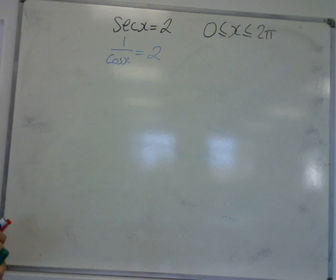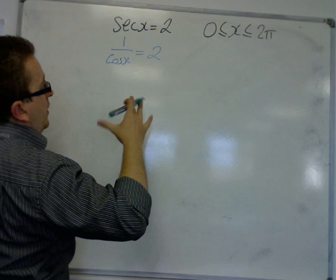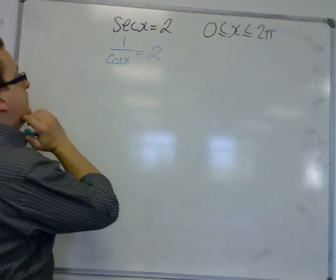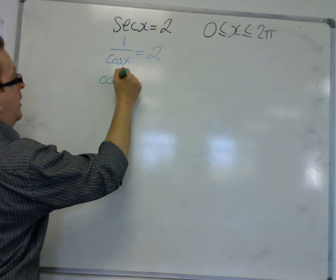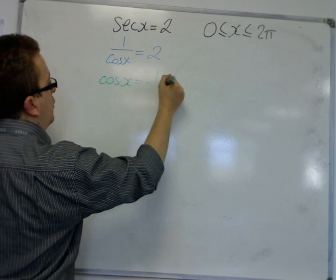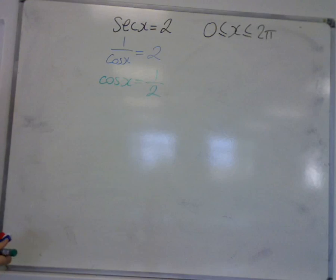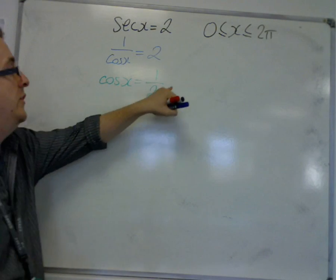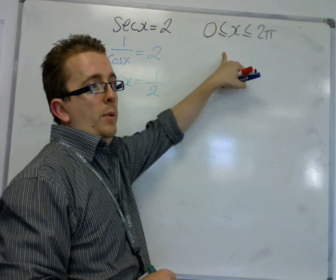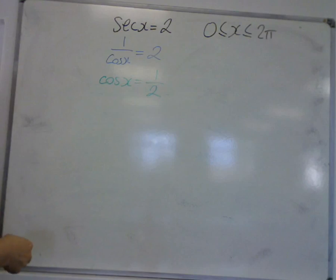If we take the reciprocal of both sides, that means that cos x must be 1 over 2. So we're actually solving cos x is a half between 0 and 2π, which is quite straightforward.